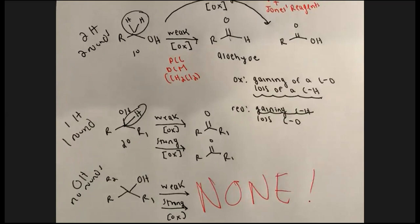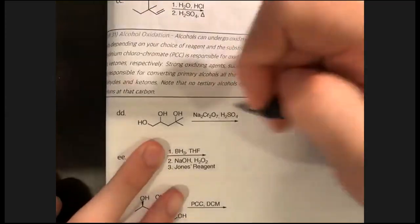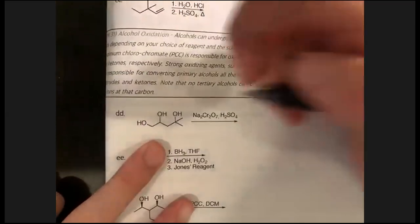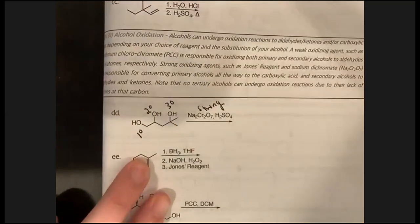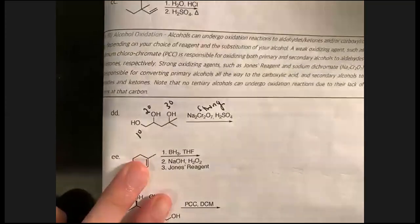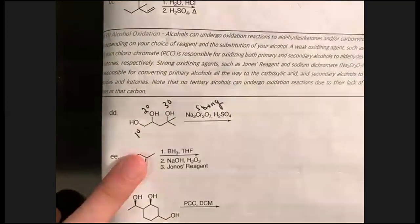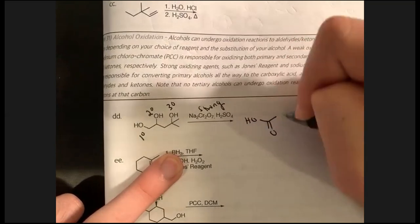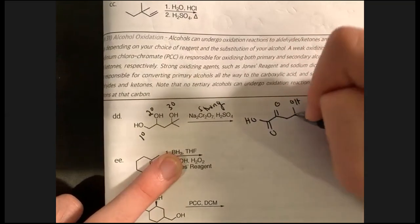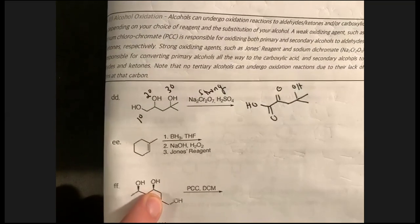To work these problems: classify the substitution and classify whether the oxidant is strong or weak. For the chromate here, it's strong. Primary gets oxidized all the way to the carboxylic acid with strong conditions; secondary goes to ketone regardless; tertiary won't react and stays as is. You'd expect a product where every oxidizable functional group has been oxidized.